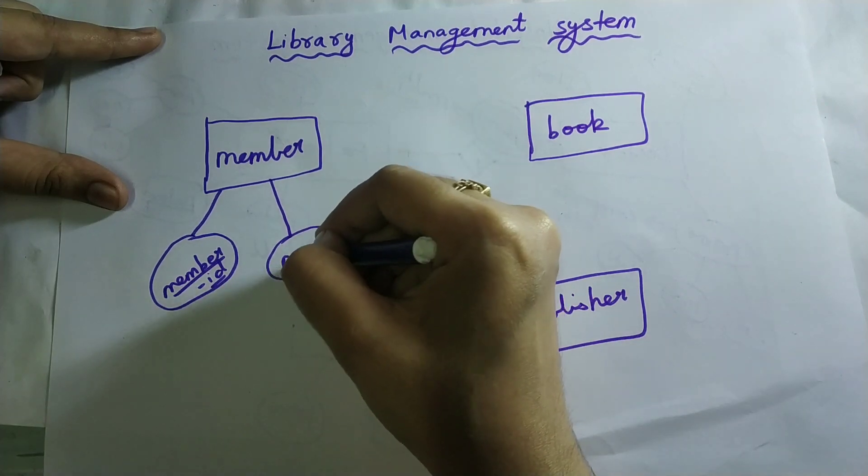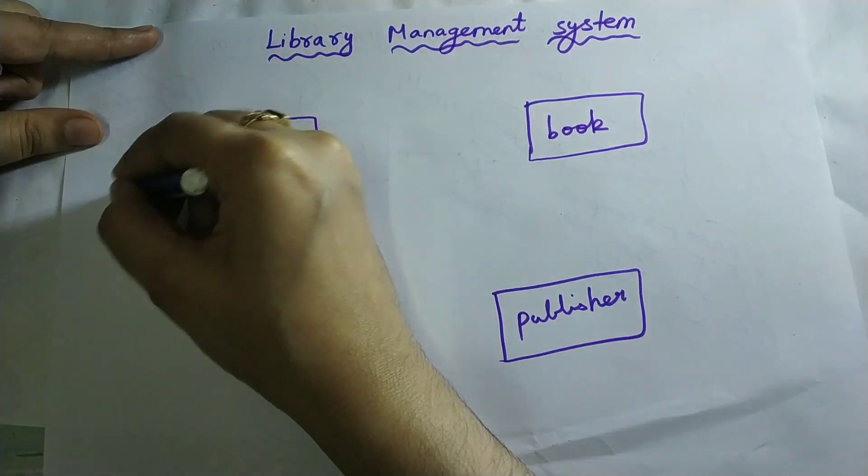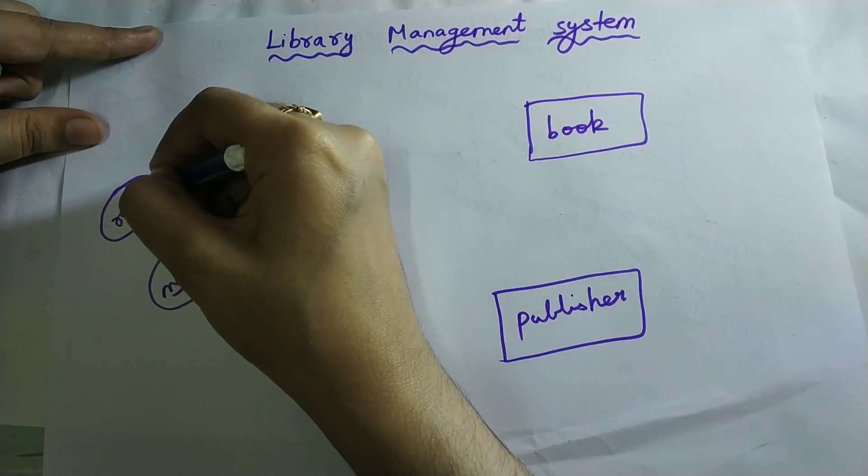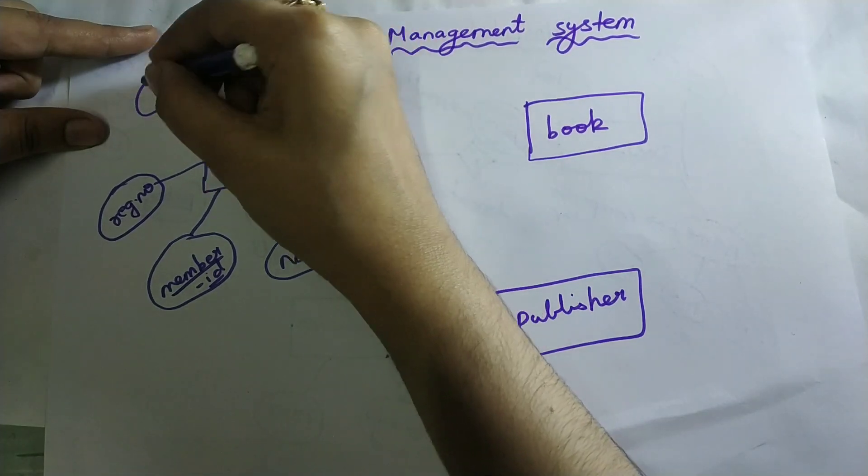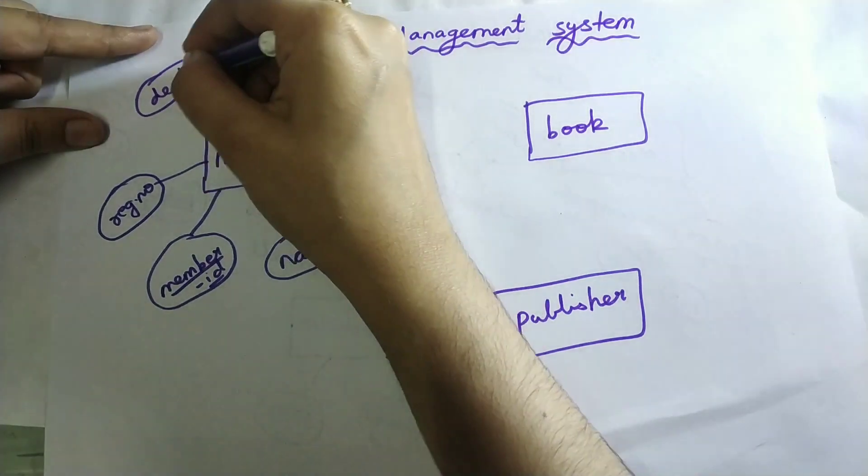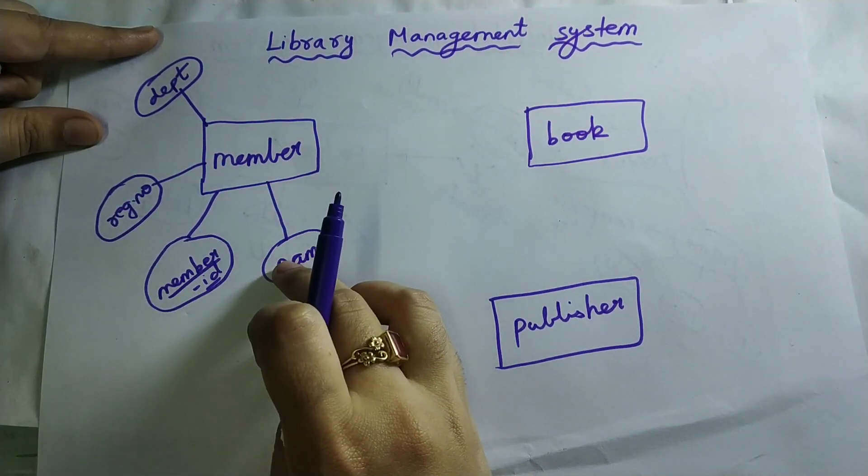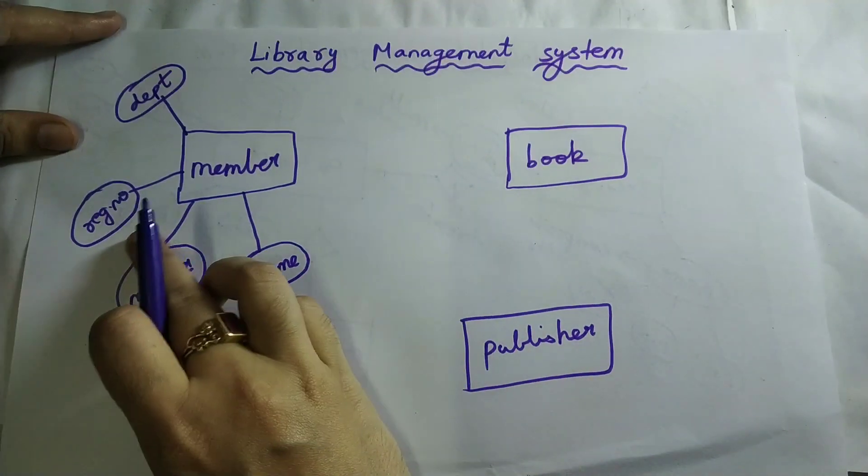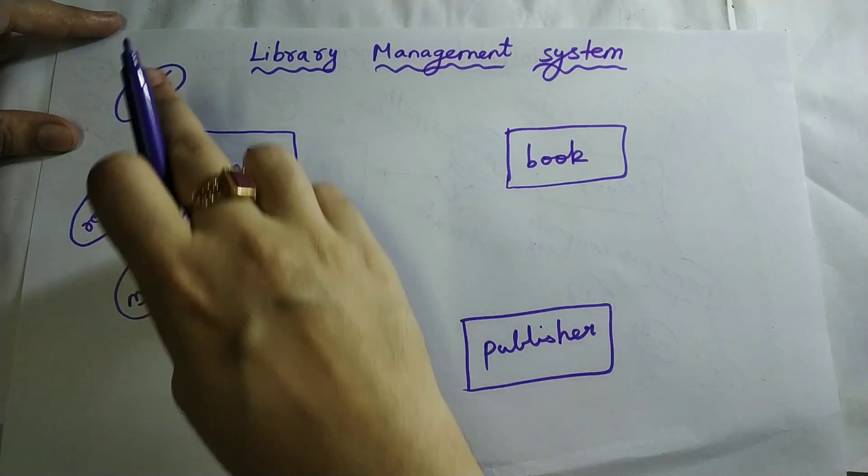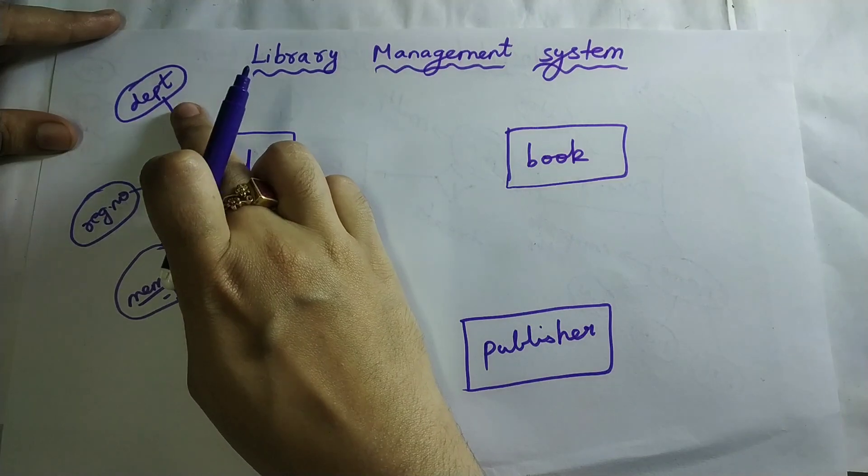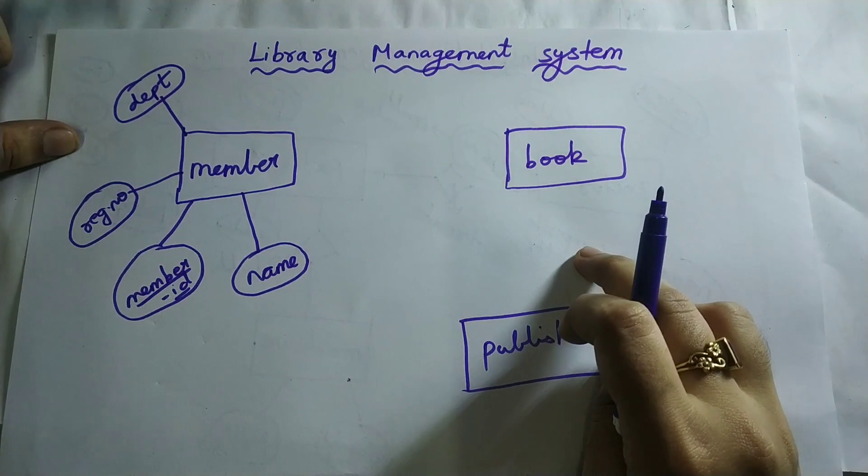Next, name of that member. Next, if the member is a student, register number of that student. Next, which department that student belongs to. So all these will be the attributes. This register number is the register number which is provided in the college. Which department: Computer Science, IT, ECE, or whatever department.